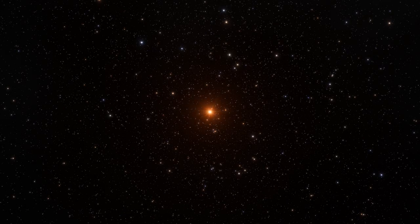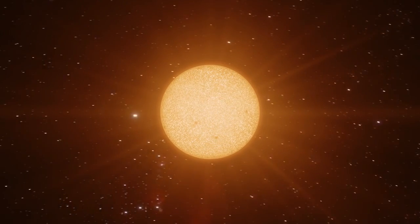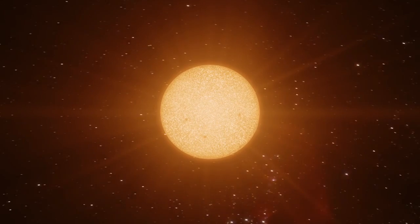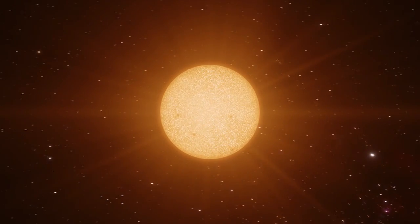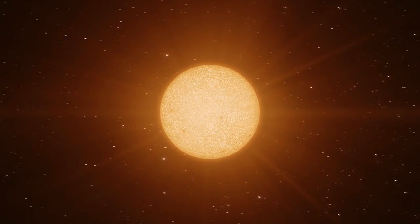Just 40 light-years from Earth lies TRAPPIST-1. It's a small, dim red star known as an ultra-cool dwarf, only slightly bigger than Jupiter.